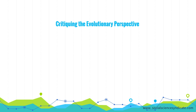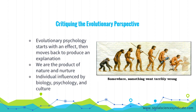Our final section is about the evolutionary perspective. Evolutionary psychology starts with an effect, then moves back to produce an explanation for that effect. For this reason, some psychologists criticize evolutionary psychology for being narrow-minded — it states that people have only one motivation for their actions: the desire to survive and pass on genes. Another important point is that we are the product of nature and nurture. While genes are powerful, they are not omnipotent. In fact, culture can supersede genes.